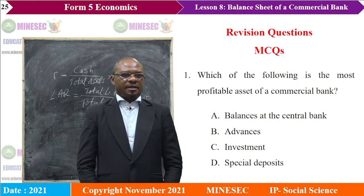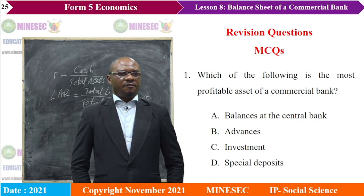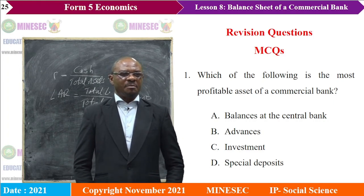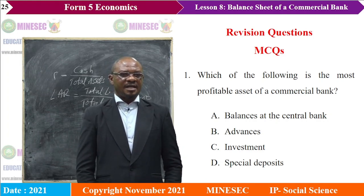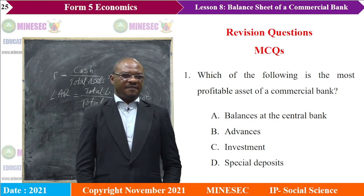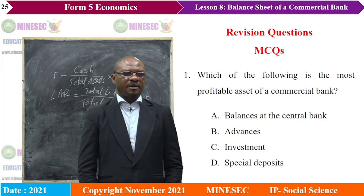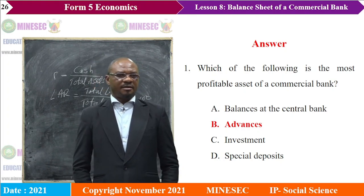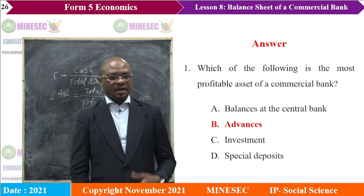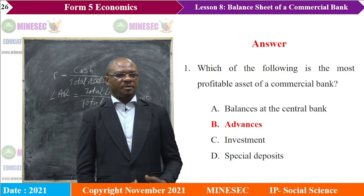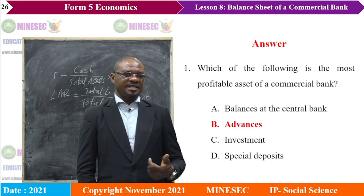Multiple choice questions to test our understanding. Question one: which of the following is the most profitable asset of a commercial bank? A, balances at the central bank. B, advances. C, investment. D, special deposits. The correct answer is B, advances. Recall that the most profitable assets of the bank are advances — term loans. The least profitable is cash. Balances at the central bank are not profitable. Investment is the next most profitable asset after advances.